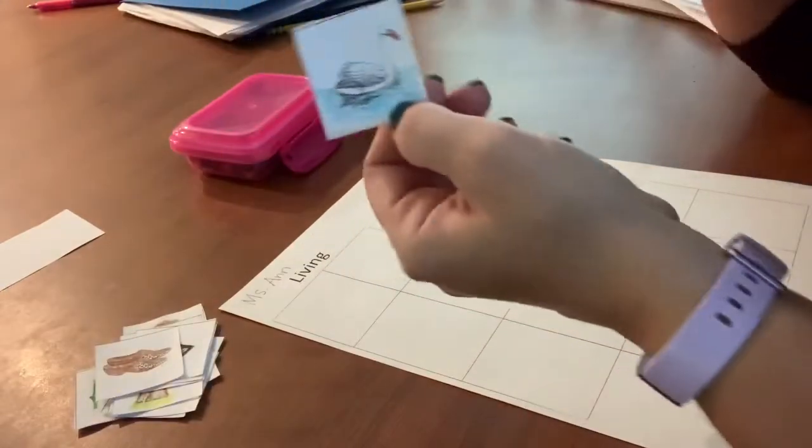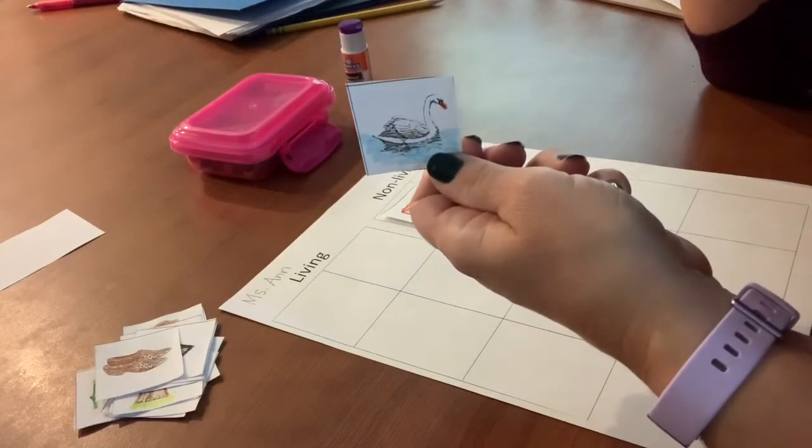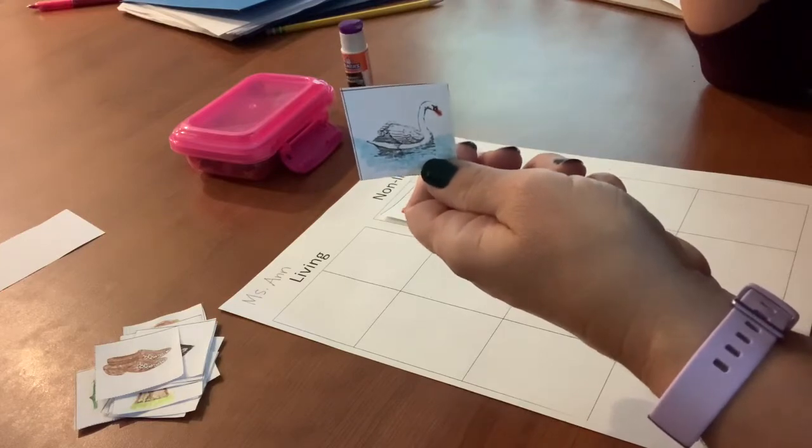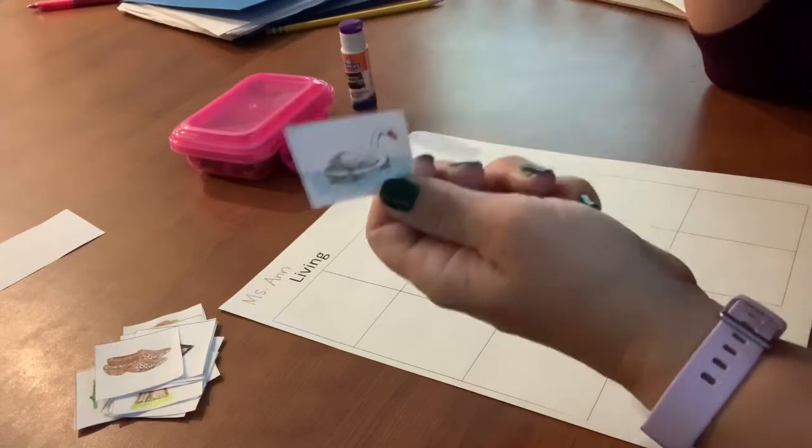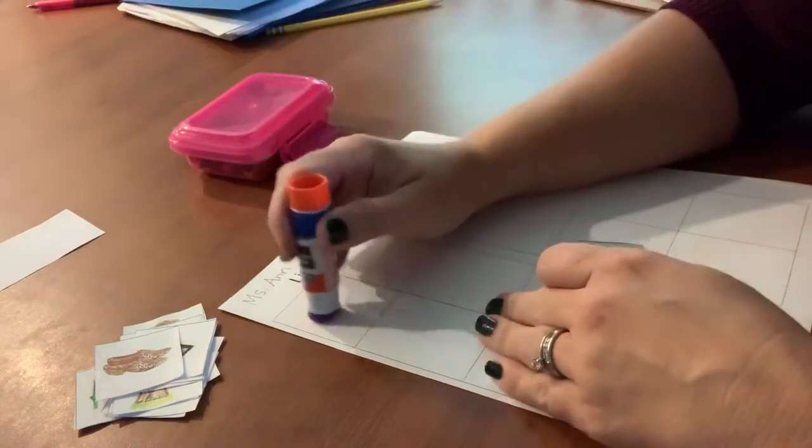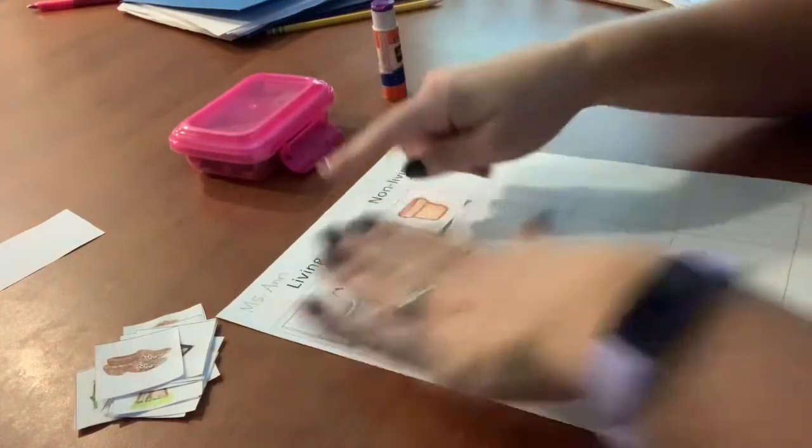Next I'm going to choose a swan. A swan is an animal. Does a swan need food? Yes. Does a swan grow? Absolutely. A swan is a living thing. So our swan will go over here under living.